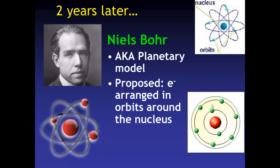Two years later, his student Niels Bohr came up with the planetary model. What Bohr said is that the electrons are arranged in orbits around the nucleus. So now you've got the nucleus, which is like the sun in the center of the solar system, and then you've got these electrons going in orbits. You can see here in the picture, here's the electrons going around like planets.